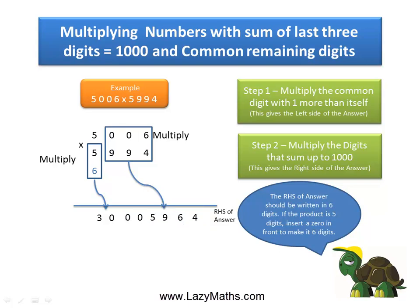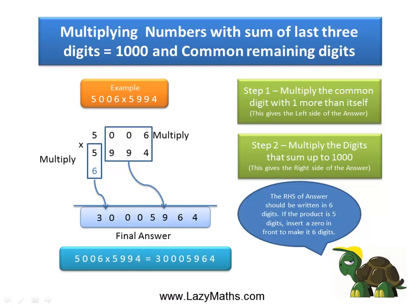Now we simply combine the left hand side of the answers together and we get the final answer. So 5006 times 5994 gives us 30005964. And that's it. Thank you.